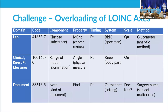Going down the left-hand side of this slide, you have what I've called a domain — lab, clinical direct patient measurements, and document types. These are three major classes of things that exist in LOINC. Lab covers observations that happen on specimens removed from the patient's body. Clinical covers things you can see and measure directly on the patient, or things they tell you.